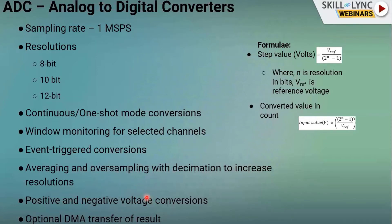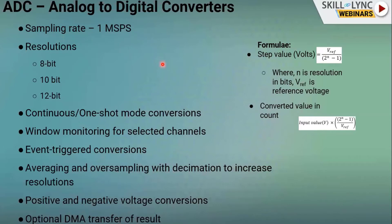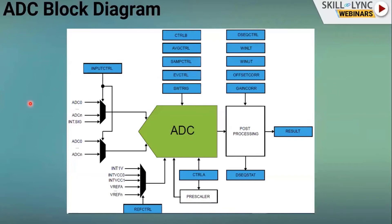There is also optional DMA transfer of results. In continuous conversion mode, results are continuously stored in a buffer. Each memory operation uses CPU resources. Using DMA, all register values are moved to a specified memory location without CPU intervention, saving CPU execution time significantly for bulk memory transfers.